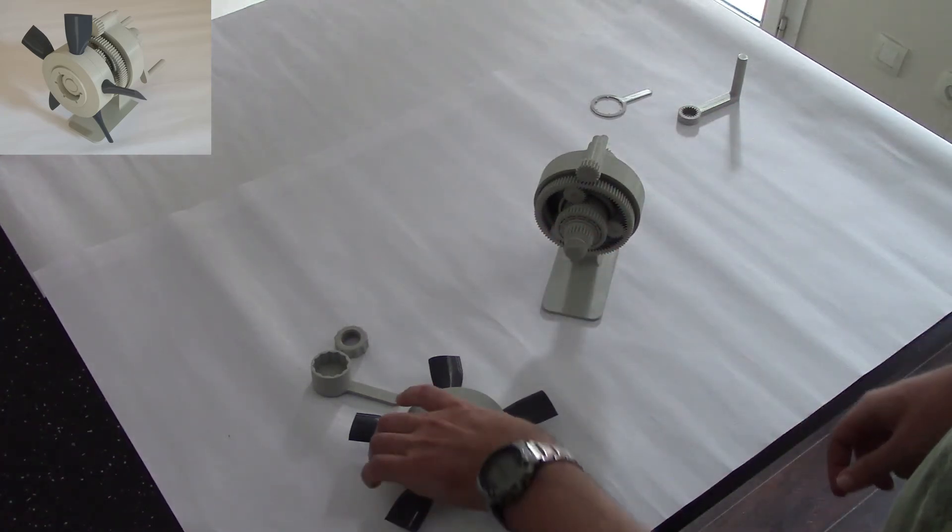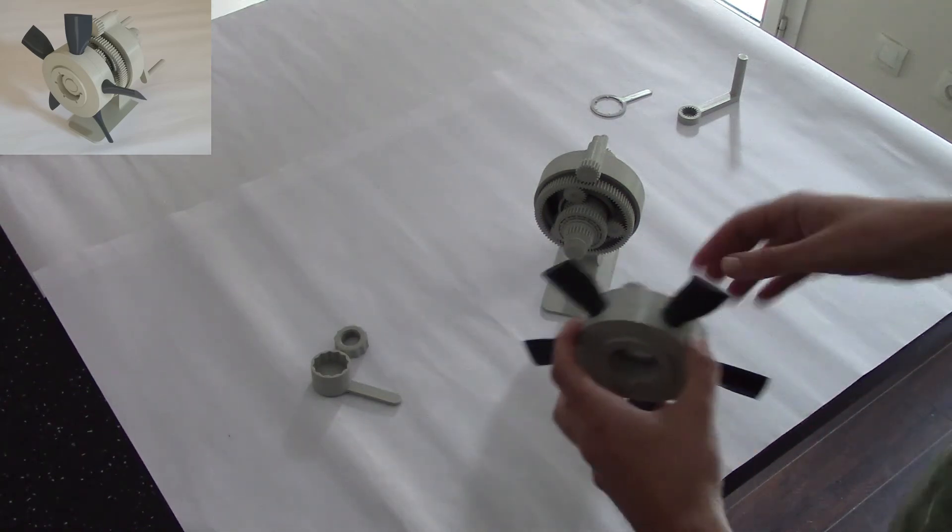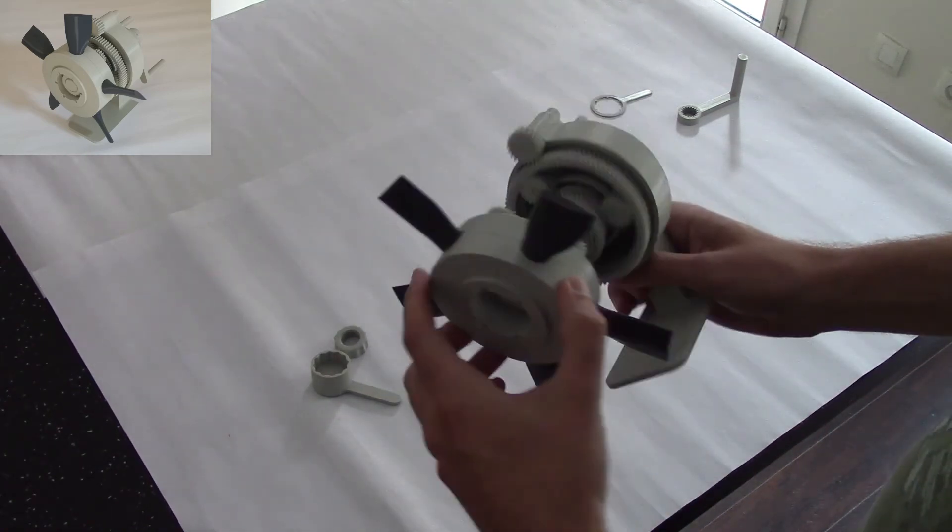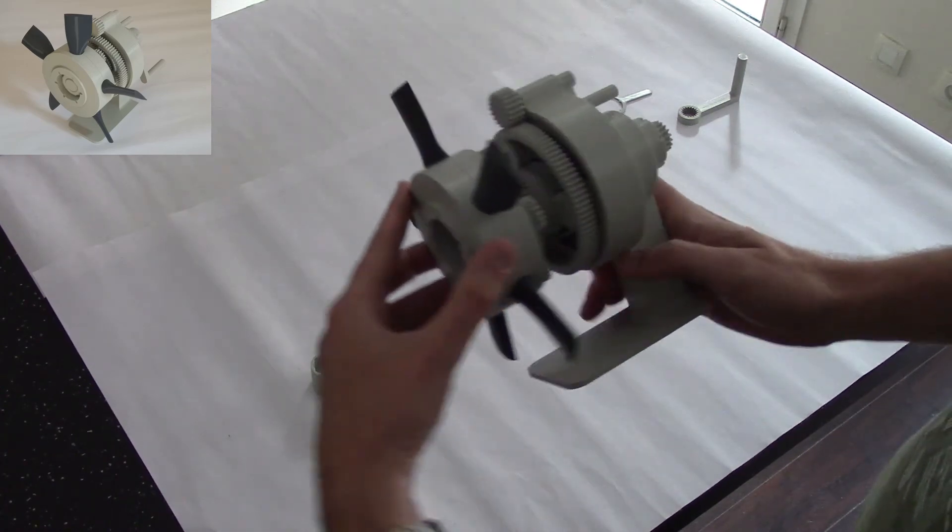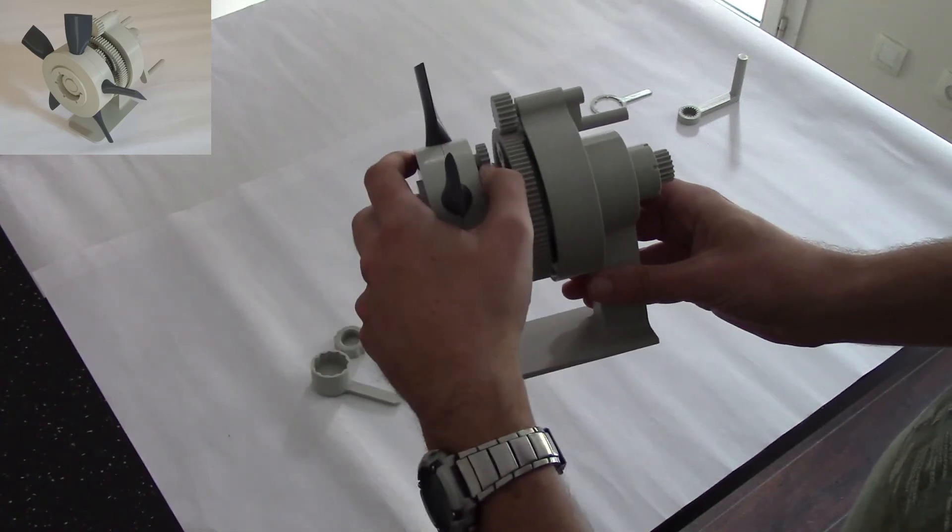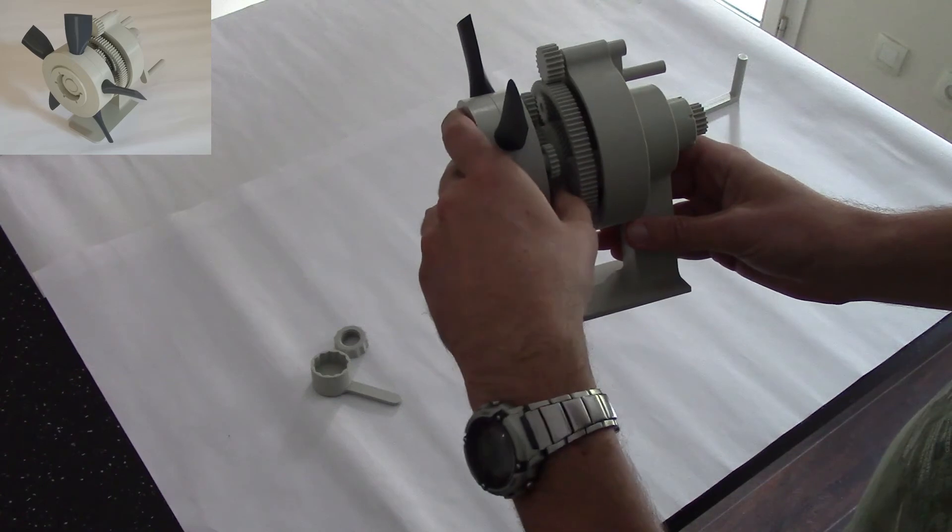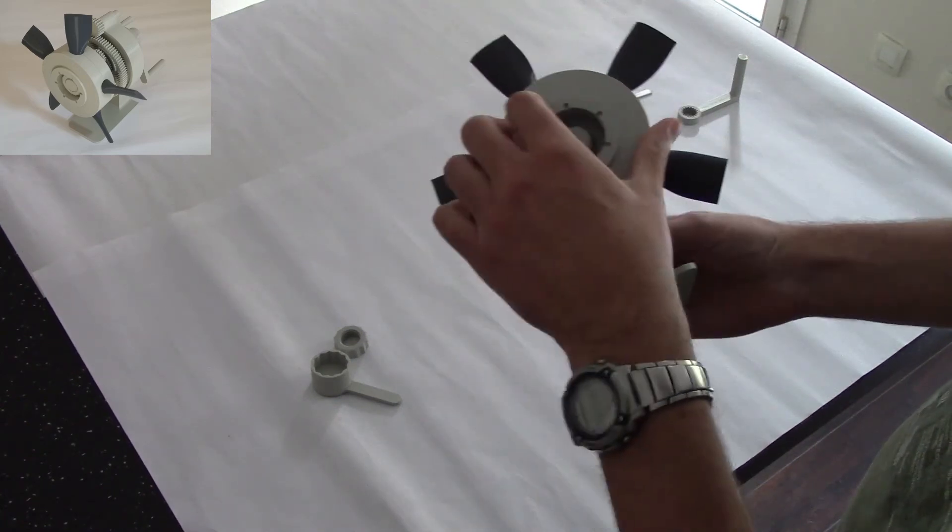Now we can assemble the propeller that we assembled earlier and put it in the front. You have to make sure that all the gears are fitting to the rear gear. Everything's fine here.